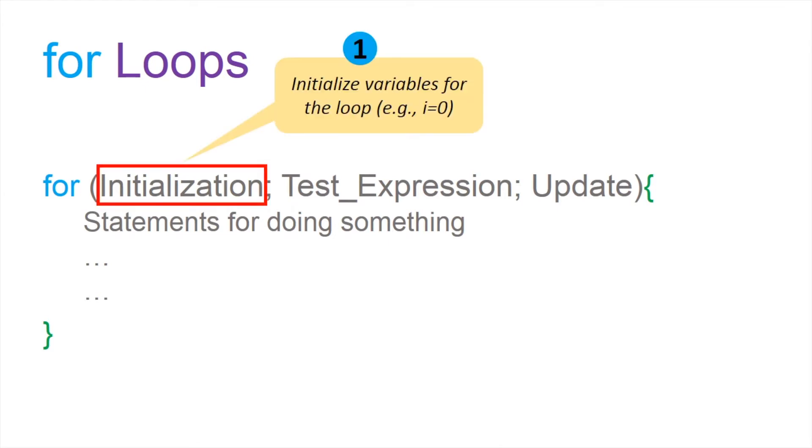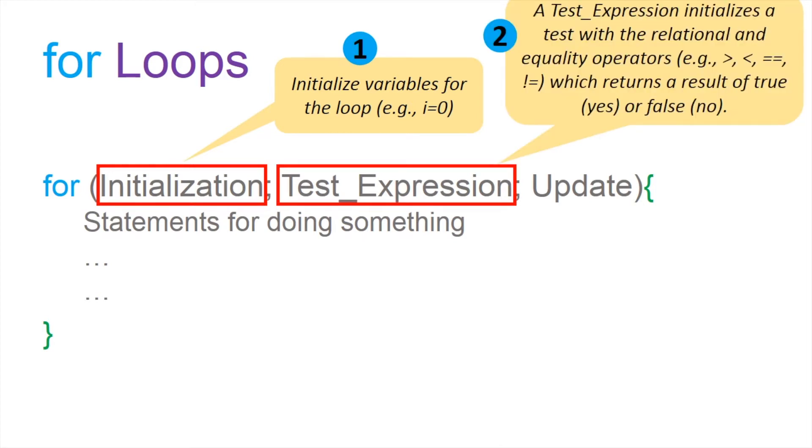A for loop has several sessions. The first session is initialization, which means it can initialize some of the variables here. Then it will go to the test expression, like in a while loop.